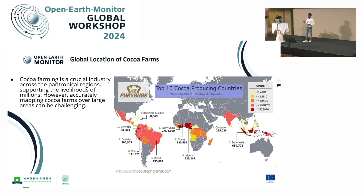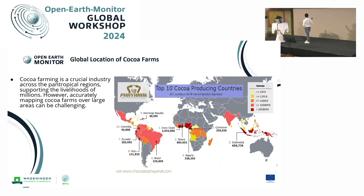Cocoa farming is one of the crucial industries — a crucial cash crop across pan-tropical regions, and many farmers depend on this crop as a source of income, not only farmers but also countries. It's contributing a great deal to the GDP of most countries where this crop is growing. As you can see in this map, this crop mostly grows along the pan-tropical regions. The majority of production occurs in Ivory Coast and Ghana, which are the top producers in Africa, and Indonesia comes third.